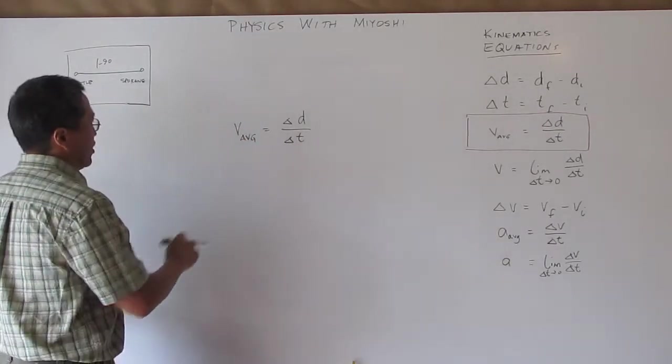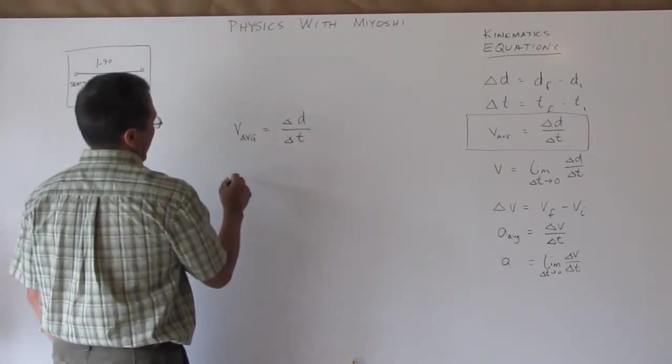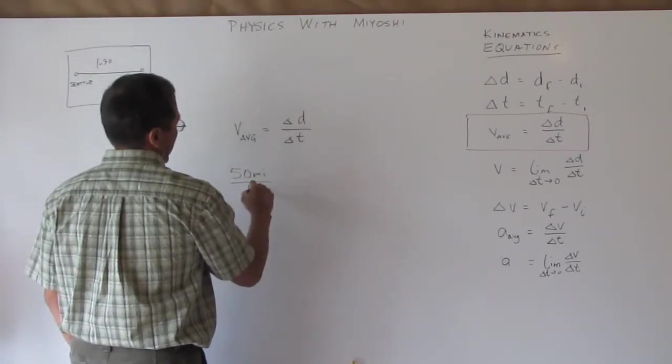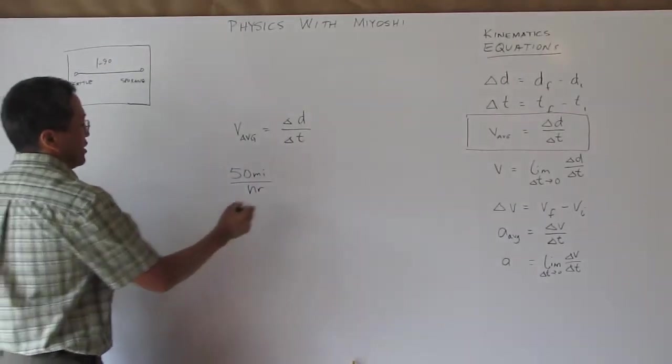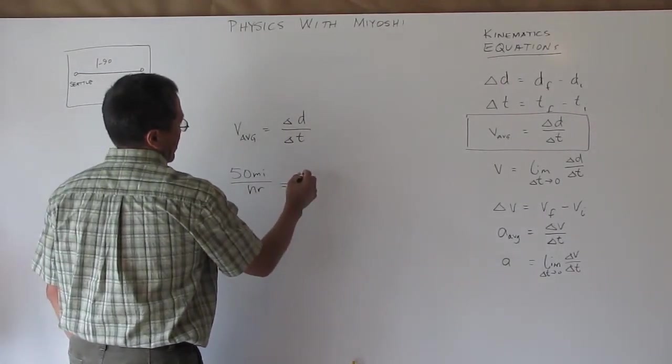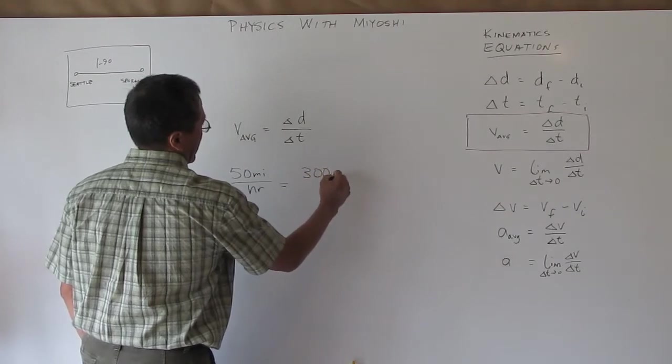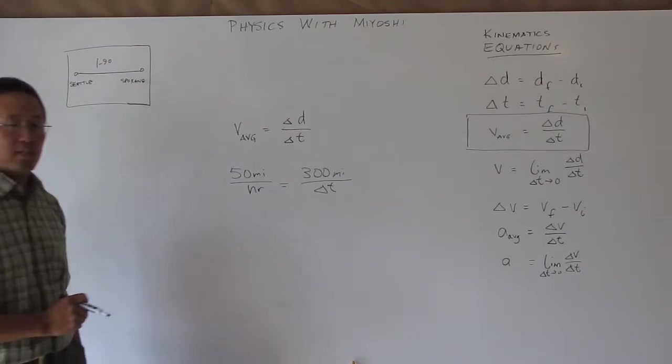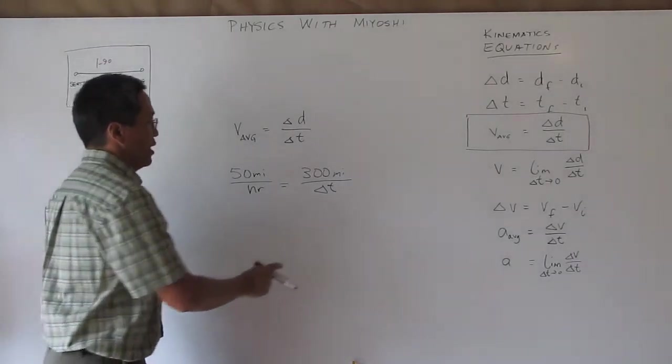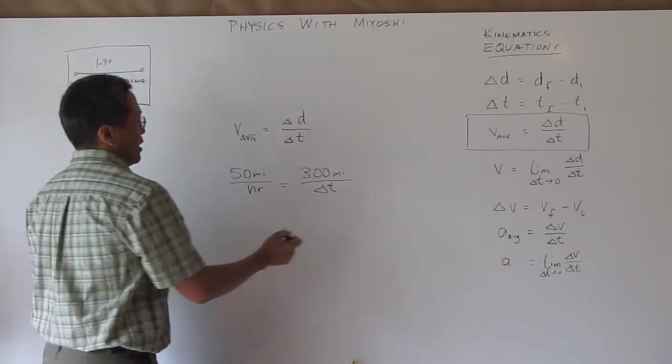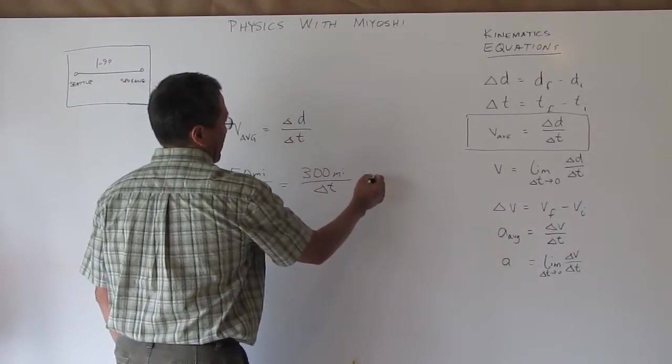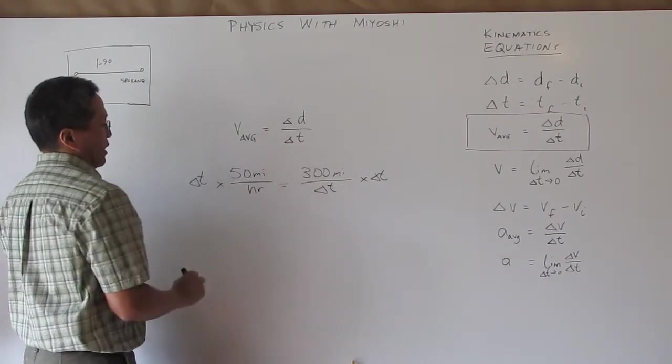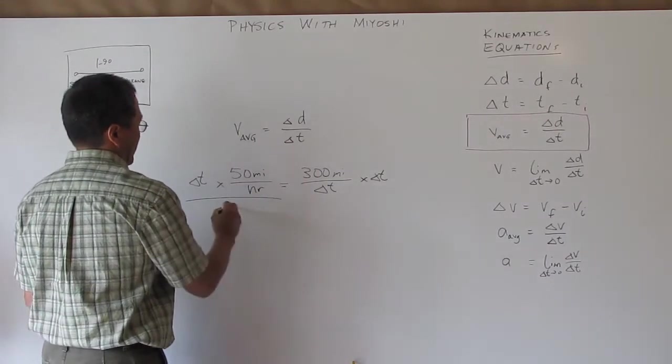So if I know my average speed is going to be 50 miles per hour and I know the distance is still 300 miles, if I want to find my time I can just use this equation. Well if I was in my math class I would multiply both sides by delta t and we would do that same thing here in physics and then I can divide by my 50 miles per hour.